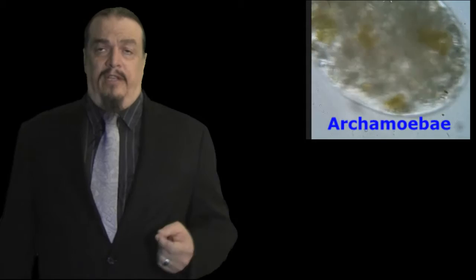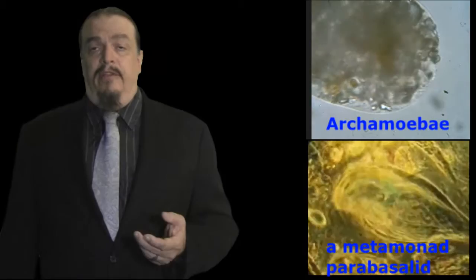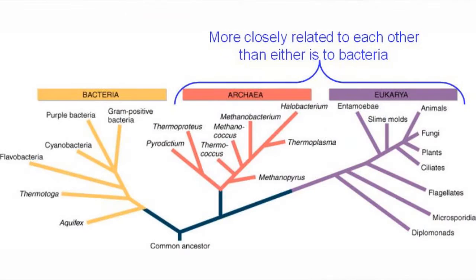A look at the structure of archaeamoeba compared to parabasalids and other metamonids gives scientists a window into the early origins millions of years ago. All organisms in the eukaryotic domain, including plants, animals, fungus, and protus, are evidently related to the LECA, so it's no surprise that under a microscope they have the same organelles.